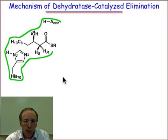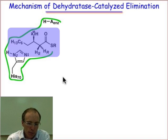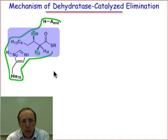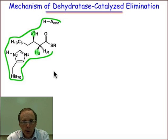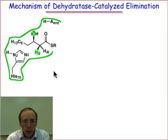In the last webcast, we learned that dehydratase enzymes catalyzed the elimination of water from β-hydroxy thioesters by removing the pro-S hydrogen and the hydroxy group to give the trans-double bond geometry. We concluded that was a process involving a syn-elimination pathway, which enabled us to rule out the E2 mechanism. That leaves the E1CB mechanism as the most viable mechanism, and in this webcast we're going to look at the process by which dehydratase catalyzes the elimination through the E1CB mechanism.